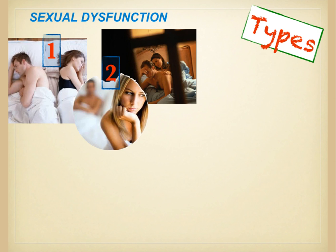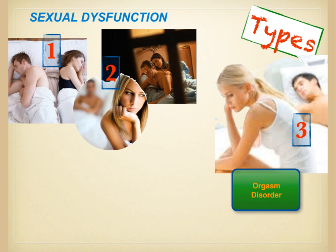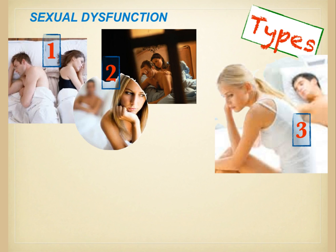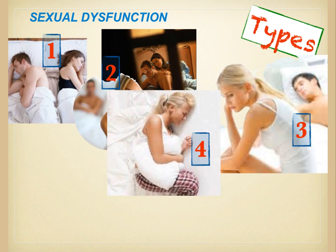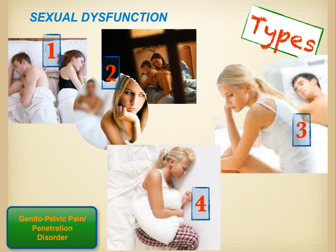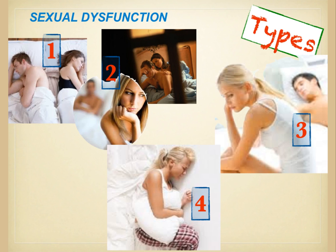This does not include the occasional difficulty — it has to be persistent or reoccurring episodes to qualify. The third category is orgasmic or orgasm disorders, including female and male orgasmic disorders and premature ejaculation — either the absence of orgasm or persistent reoccurring delay in reaching orgasm. In men, premature ejaculation is included in this category. The last category is genital pelvic pain penetration disorder.